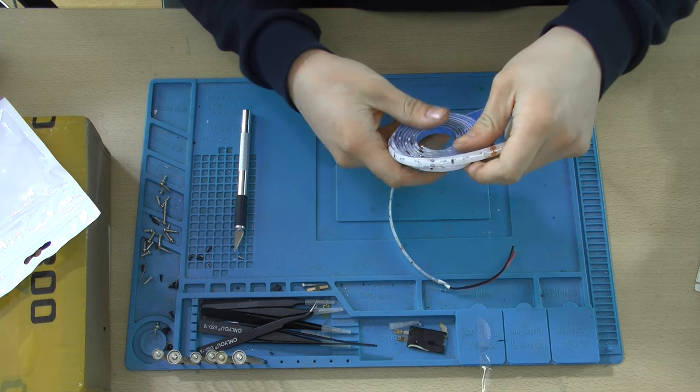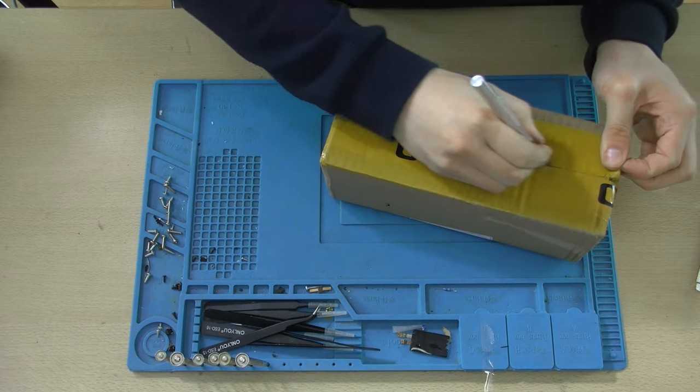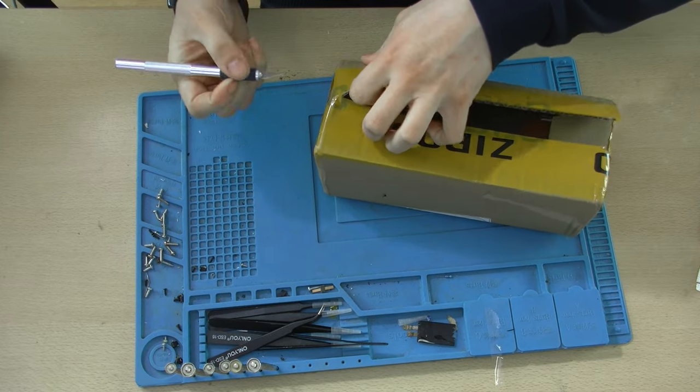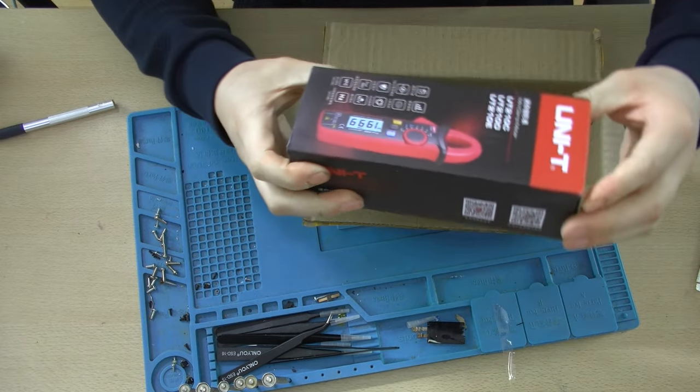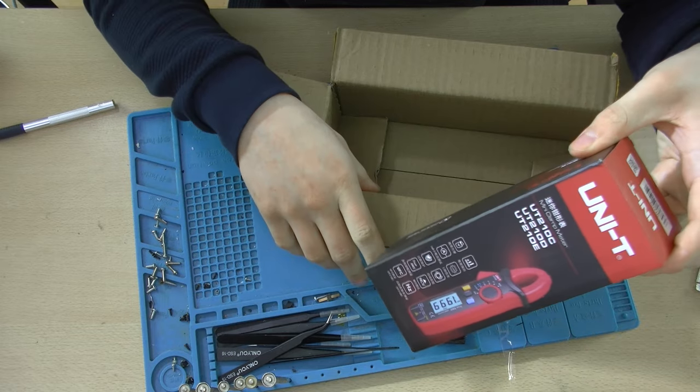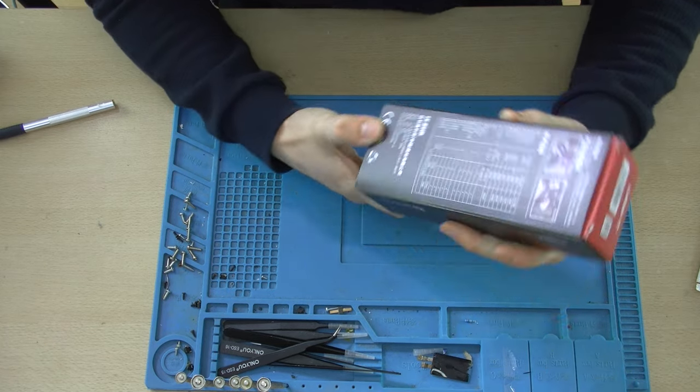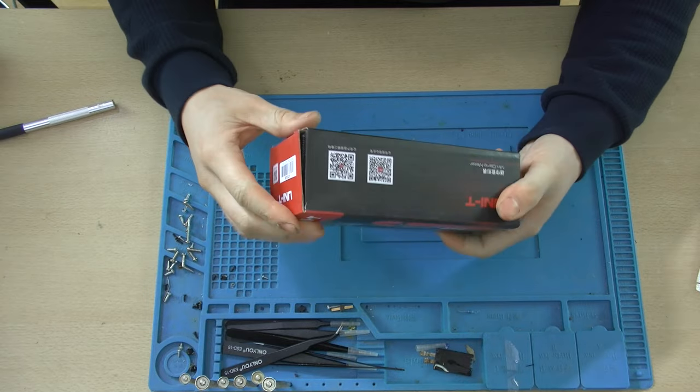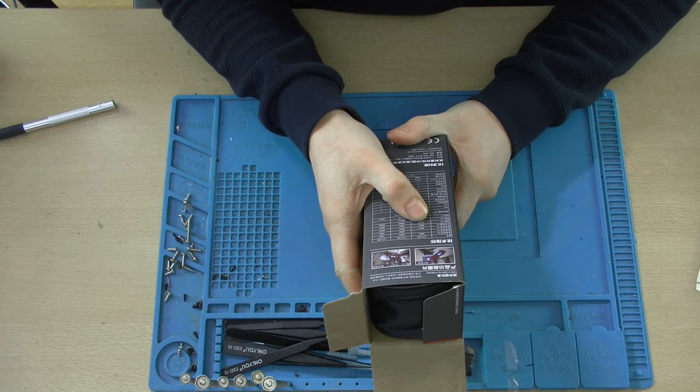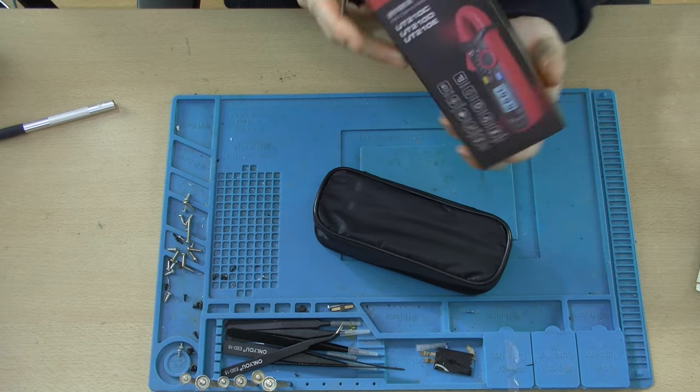So now on to the item that I actually thought I would get in this package. As I said I bought one but it didn't meet my expectations so I bought another one and it's a UNITY UT-210E. The E does not stand for electronic. The E stands for the fact that you can measure AC current and you can measure DC current with the current clamp. The C stands for... I'm not sure actually. Either the C or the D stands for AC and either the C or the D stands for DC but this one can do both.